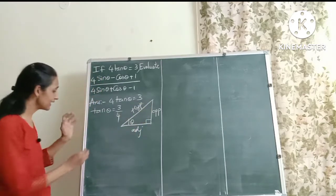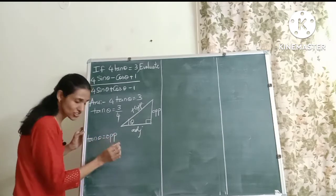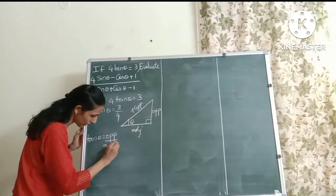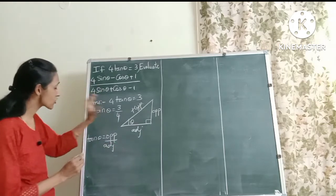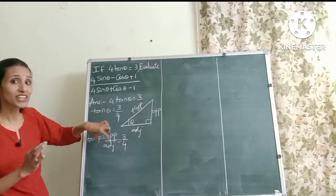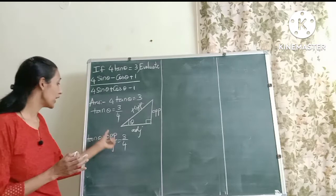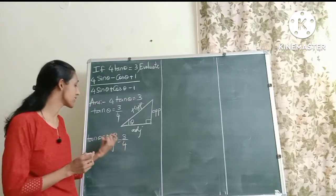Now I know that tan θ is the opposite side upon the adjacent side. This we are all aware of. Now tan θ is also given as 3 by 4. That means the ratio of the opposite side to the adjacent side is 3 by 4.